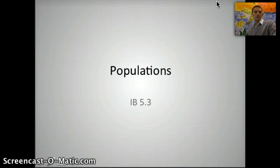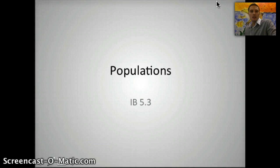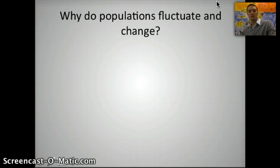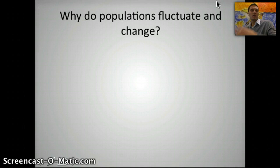Today we're going to talk about populations — IAB section 5.3 — really looking at what causes populations to change and how we can track that over generations, and some of the things that we see happen with populations. The first question is: why do populations fluctuate or change? This is happening all the time, and most populations are already pretty well established, but we can sometimes see populations go up or go down depending on a number of different factors.